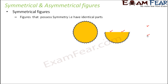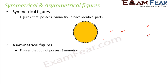A symmetrical figure means that there would exist one or more lines along which you would be able to divide that object into two halves such that the two halves are exactly identical and they would coincide with each other completely. That is the complete definition of a symmetrical figure. Now let's talk about asymmetrical figures — something which is not symmetrical is asymmetrical.